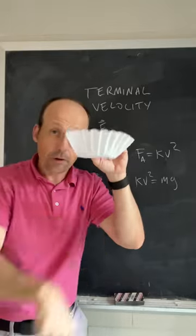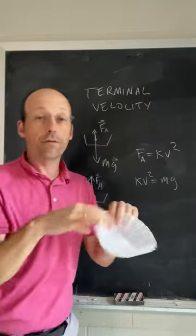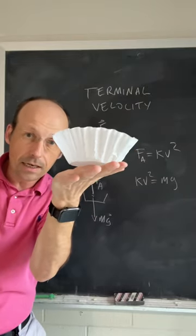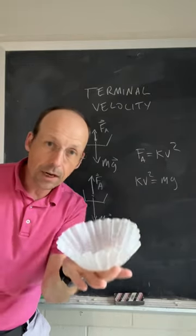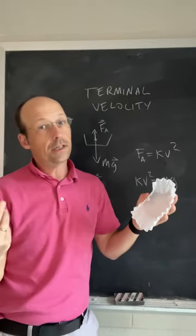...the downward pulling gravitational force and the upward pushing air resistance force are equal. In that case, the net force is zero and it moves at a constant speed. And that is terminal velocity.